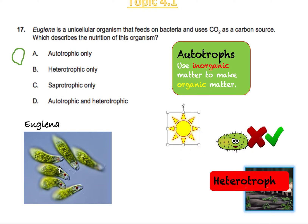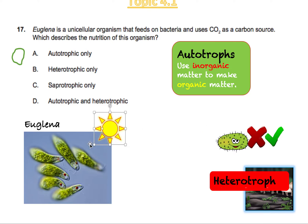Euglena are technically autotrophs. The reason they're so green — as you can see here — is because of these little organelles inside called chloroplasts. Chloroplasts are the organelle in plant cells that allow photosynthesis. So euglena behave like plants: they use chloroplasts to absorb sunlight and inorganic substances such as carbon dioxide and water to do photosynthesis and survive. So in a way, they're autotrophs — but we can't stop there.